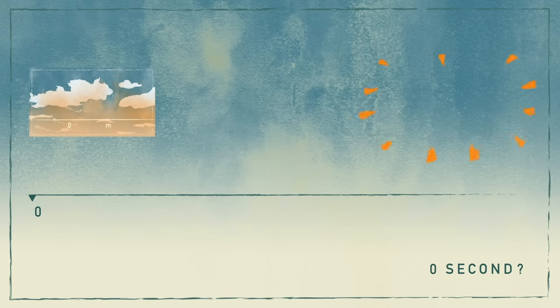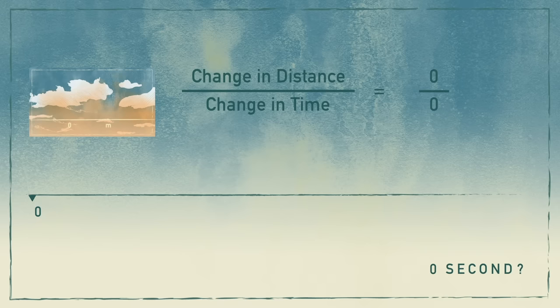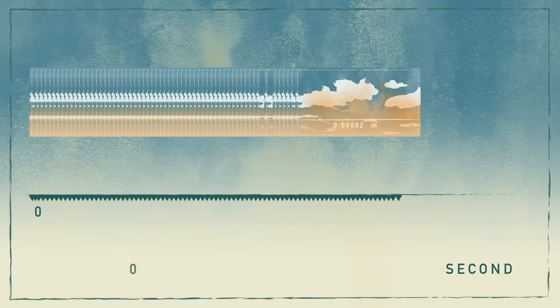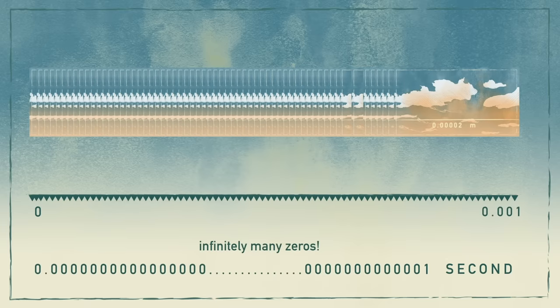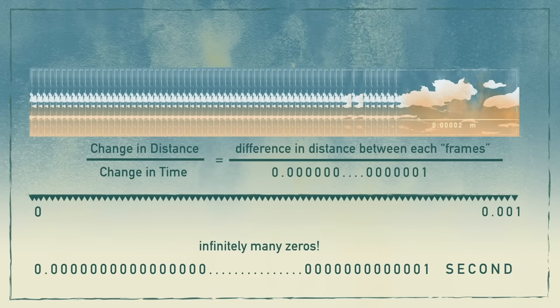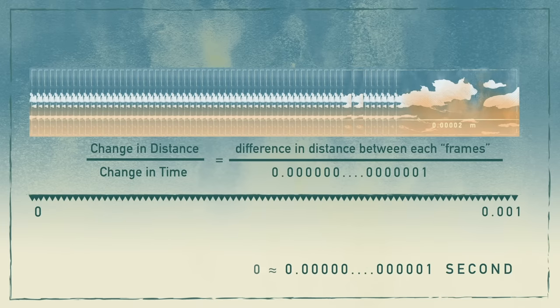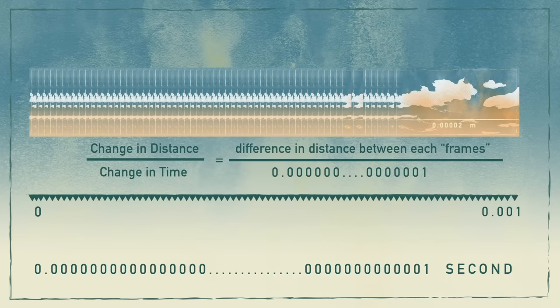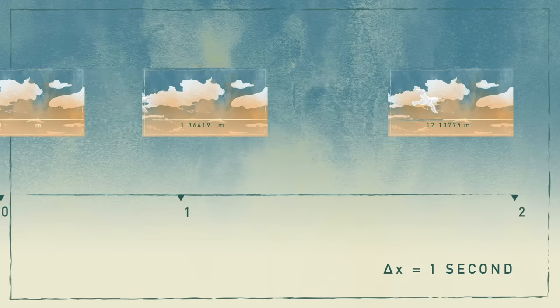Wait — nothing can change within zero seconds when time doesn't even pass. Even a powerful subject like math can't change something absurd into something sensible. What we can do is record the change within an infinitely small period of time — almost zero seconds, but not exactly zero. We call this small period of time delta x.